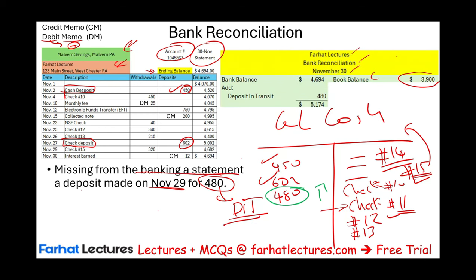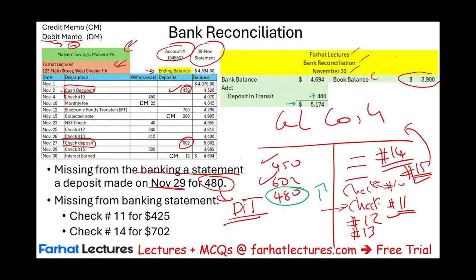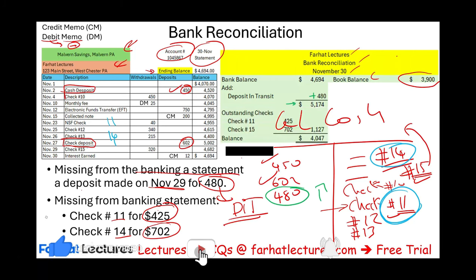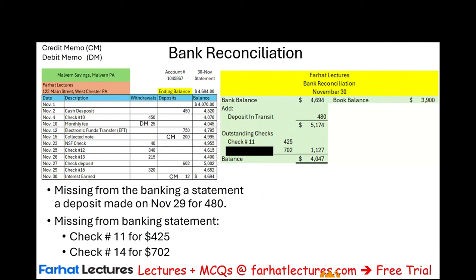Starting the bank reconciliation: we add the deposit in transit. The bank balance was $4,694, then we add the deposit in transit, giving us $5,174. Now for outstanding checks — check number 11 was for $425 and check number 14 was $702. We deduct outstanding checks. For the purpose of this example, we assume no errors or mistakes. We are done with the bank side of the bank reconciliation.